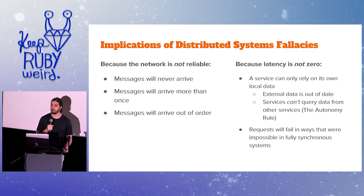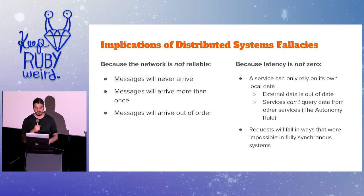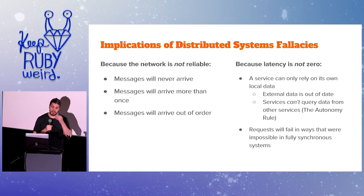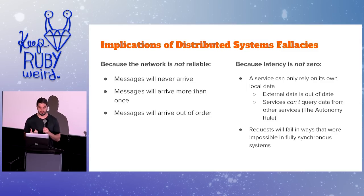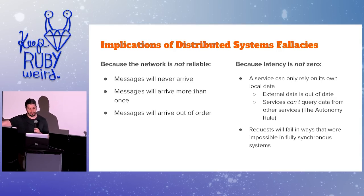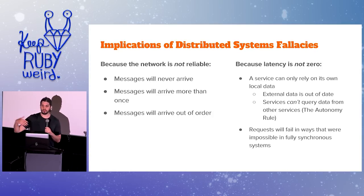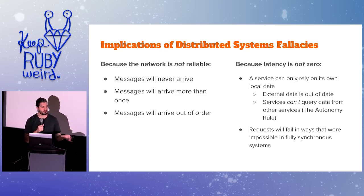Because the network is not reliable, we can count on messages never arriving sometimes, arriving more than once other times, and arriving in a different order than they were sent. This is reality — there's no getting around the laws of physics. And because latency is not zero, services can only really operate with their own local data. They can't query other services, because by the time you get a response back that information might be out of date, leading to wrong decisions based on inconsistent data. We also have to be prepared for our microservice to cope with failure modes that did not exist in fully synchronous systems.